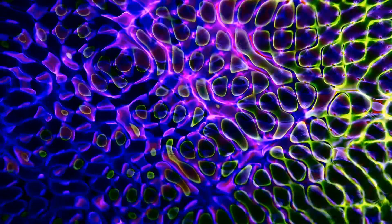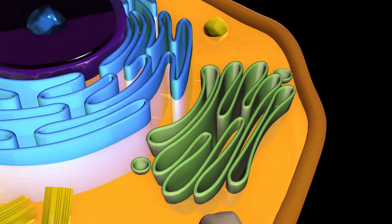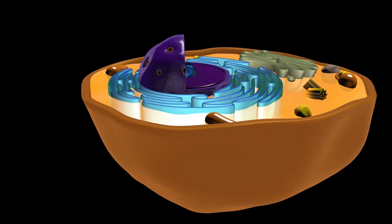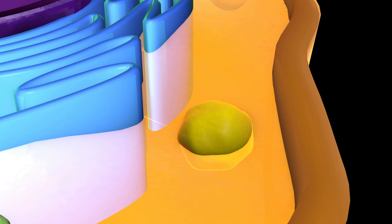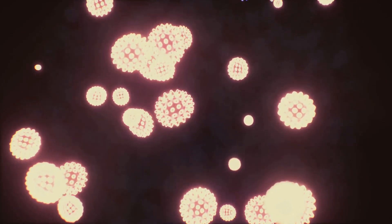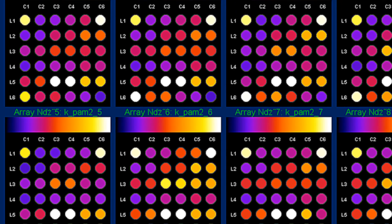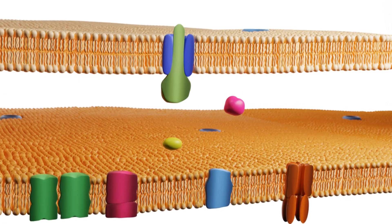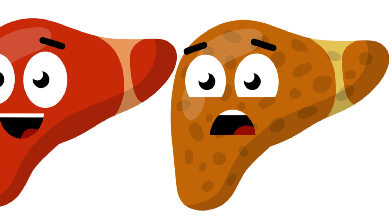The smooth ER, on the other hand, lacks ribosomes and appears smooth under a microscope. It's involved in a variety of cellular functions, including lipid synthesis, calcium storage and detoxification. The smooth ER is particularly abundant in cells that are specialized for lipid metabolism, such as cells in the liver that synthesize cholesterol and other lipids. The relative abundance of rough and smooth ER varies depending on the cell type and its function. Cells that secrete large amounts of protein, such as pancreatic cells that produce insulin, have extensive rough ER networks. In contrast, cells that are involved in lipid metabolism, such as liver cells, have abundant smooth ER.